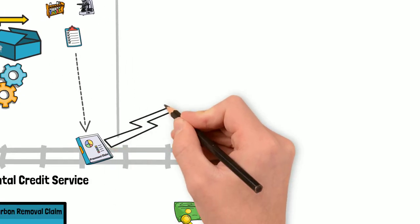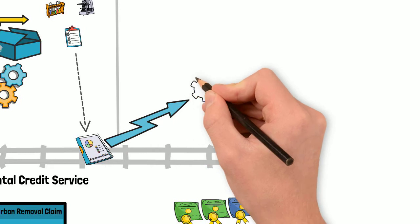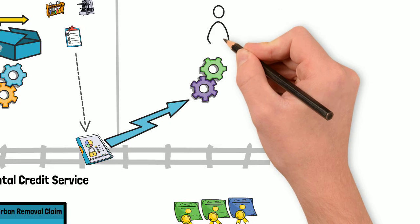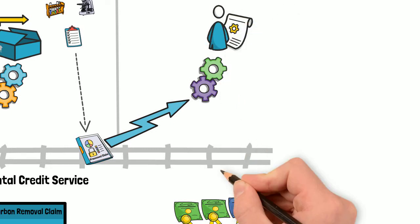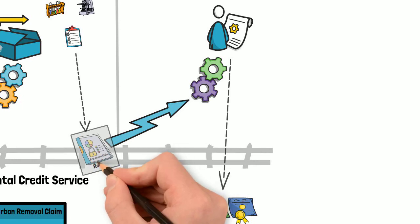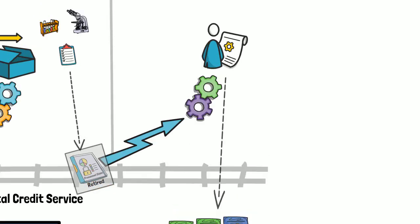The issuing registry is automatically notified of the processed claim and begins the final quality and compliance checks for the credit to be issued. Once complete, the carbon removal credit is issued to the project and the processed claim is retired, preventing it from being credited more than once.